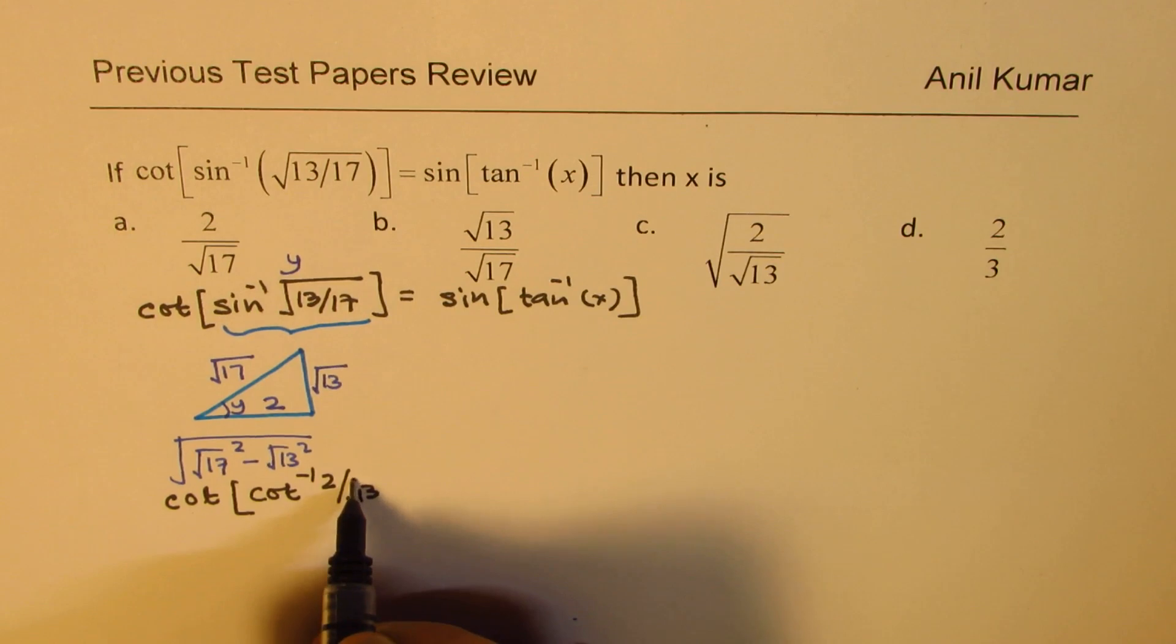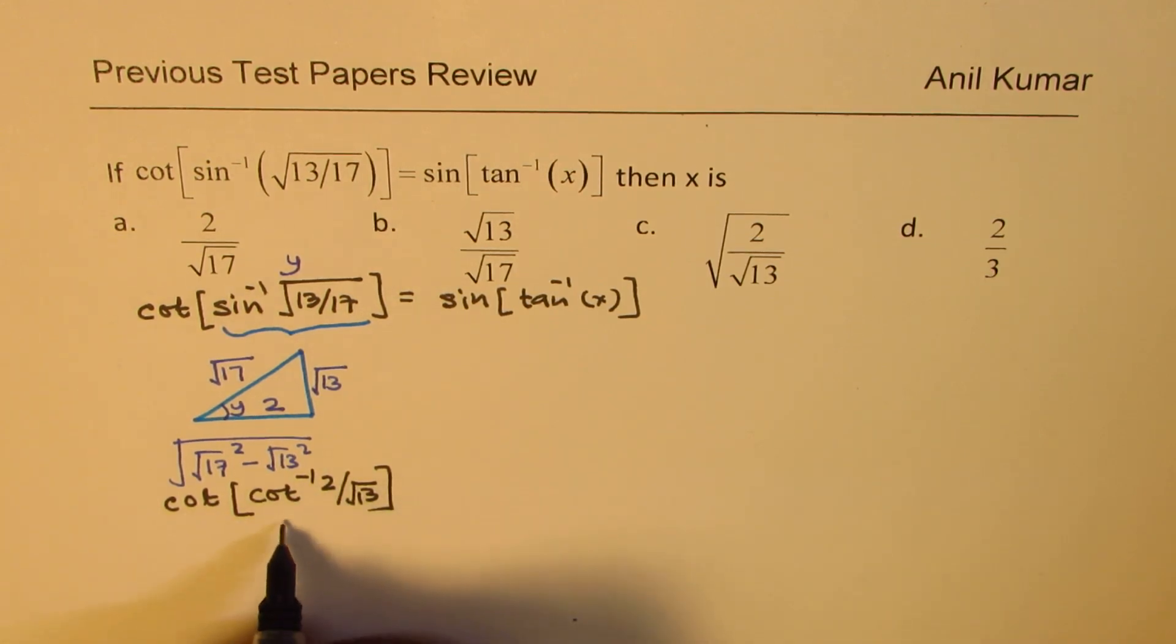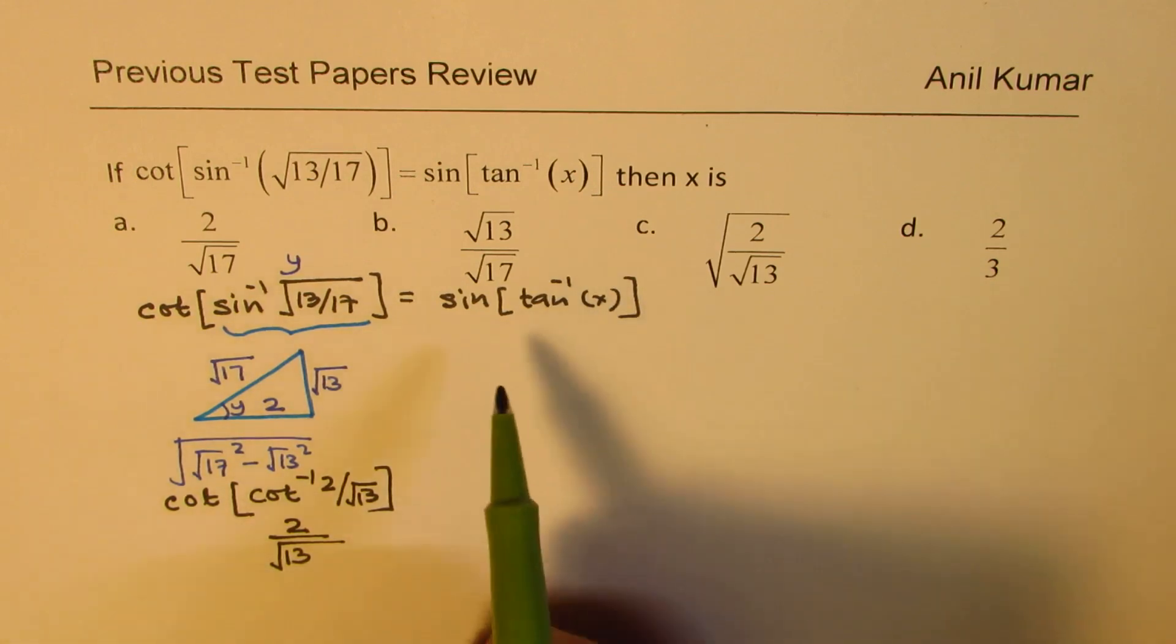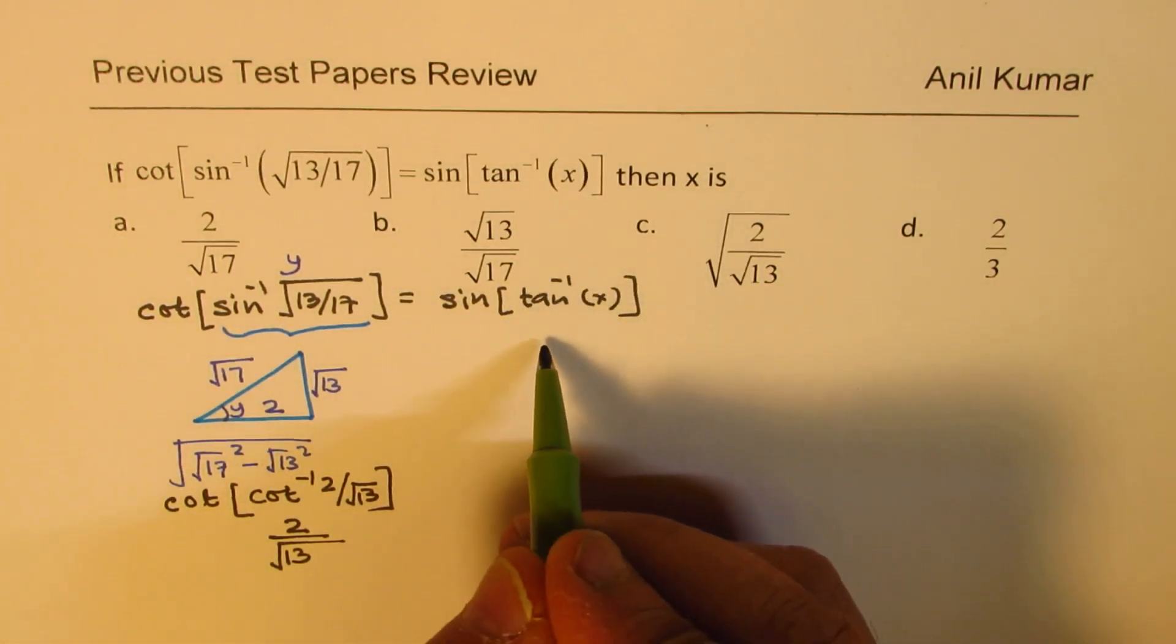When you open this up, cot of cot inverse 2 over 13, the left side is 2 over square root 13 for you. That is how we get our left side. Now let's work on the right hand side, tan inverse x.